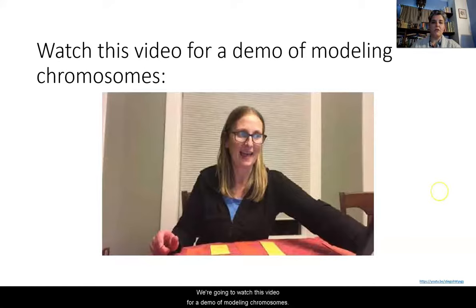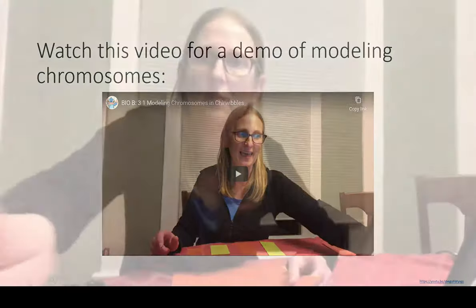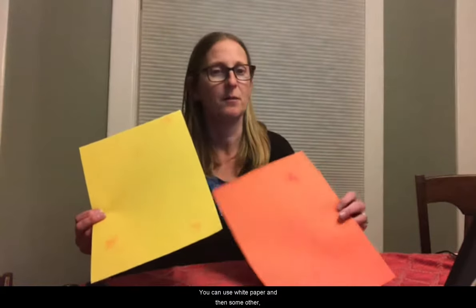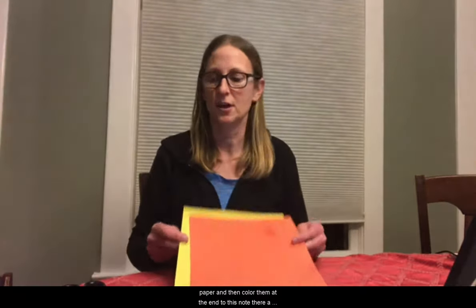We're going to watch a video for a demo of modeling chromosomes. Hi, my name is Miss Fox, and I am a biology teacher at Lincoln High School. Today I'm going to share with you how to do 3.1 modeling chromosomes with cherwibbles. The very first step is to gather your materials to construct your chromosomes. You need two different colors of paper — you can use white paper and some other paper like newspaper or scratch paper. It doesn't have to be nice paper, just two different colors. You'll also need scissors and a pen or something to write with. And I also have a coin — just a penny — that I can use during this activity.